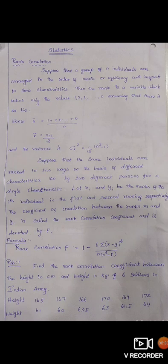we find out the mean value x̄ = (N+1)/2 and the variance σ² = (1/12)(N²-1). Suppose that the same individuals are ranked in two ways on the basis of different characteristics or by two different persons for a single characteristic.